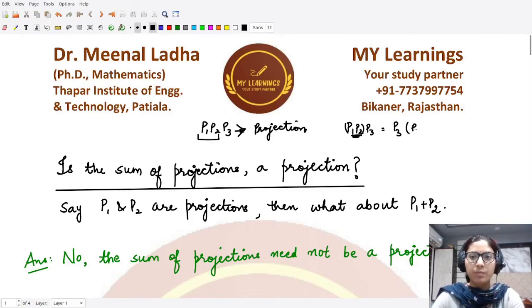So that means whenever you have P1, P2, P3 equals P3, P1, and P2, you can treat this as a single projection. And if P1 and P2 commute with each other, there is no issue. If that is there, you could say this triple product is also a projection.